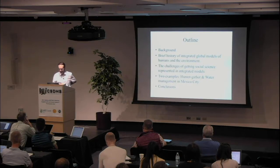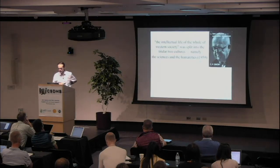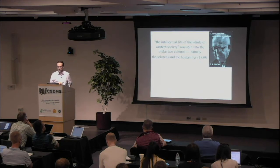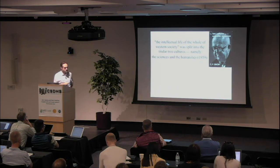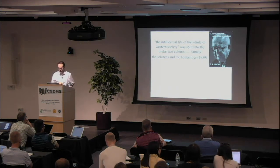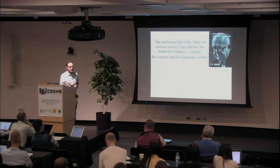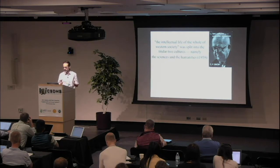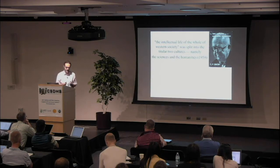The title 'Two Modeling Cultures' refers to a famous essay by C.P. Snow entitled 'Two Cultures,' from about sixty years ago. It refers to the distinct cultures between the humanities and the sciences, and he argued that they were quite distinct communities that were not really interacting with each other. This essay got a lot of critique.